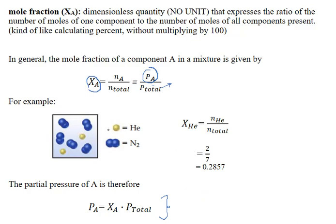Let's look at an example. If we have this mixture of gases of helium and nitrogen, two of the particles are helium out of a total of seven. So the mole fraction of helium is two over seven, or 0.2857. In terms of percentage, 28.57% of the gas is helium. It therefore makes sense that if helium makes up 28.57% of the total moles, the partial pressure of that gas will also make up 28% of the total pressure.